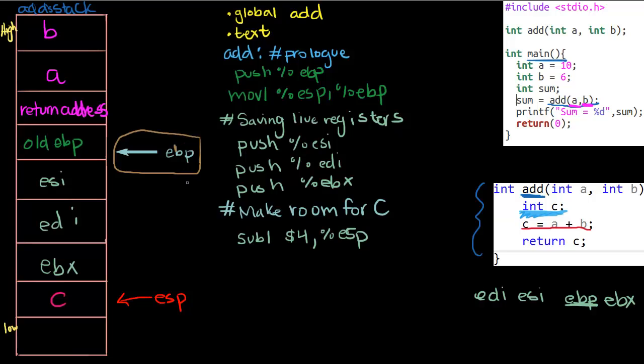EBP did not move, and that is exactly why we call it the base pointer. EBP never moves when we're operating on the stack.